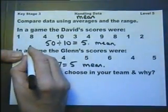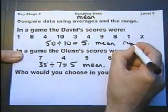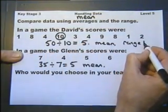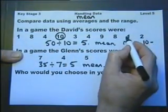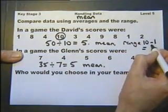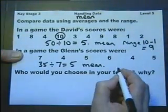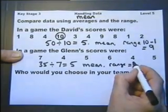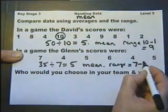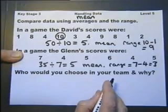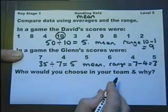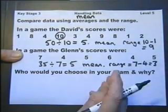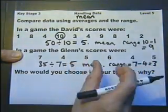Let's look at David's range. Now, the range is the largest score minus the smallest score. So David's range is 9. Let's look at Glenn's range. The range is the largest score minus the smallest score. So what we can say here is that Glenn is more consistent because his scores are tighter packed and his range is smaller.